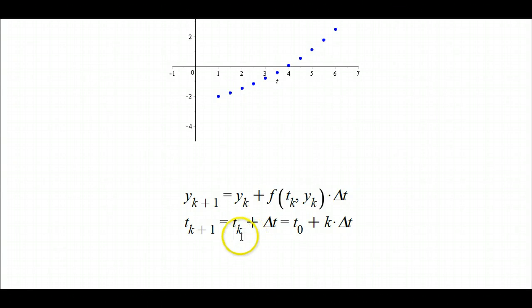And the t values are, as they were stated above, you just take your previous time and add on delta t, which is the same as taking your initial time and adding on k steps of size delta t.